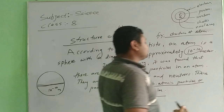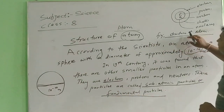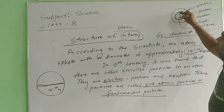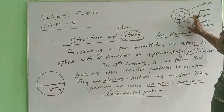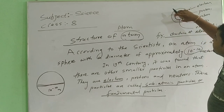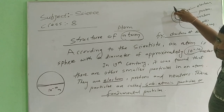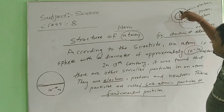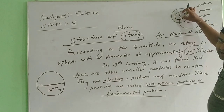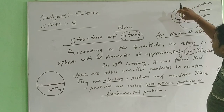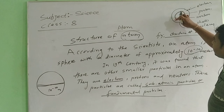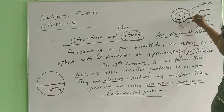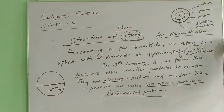Here you will see the structure of an atom. Inside the atom, the central part is called the nucleus, which lies in the center. This is the structure of an atom. Inside this central position, this is known as the nucleus. And inside this nucleus, proton and neutron are located. And around this nucleus, there is a circular path — this is the orbit, or we can say, the shell.